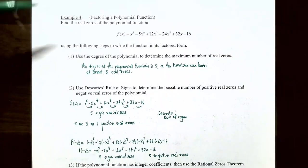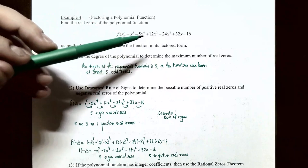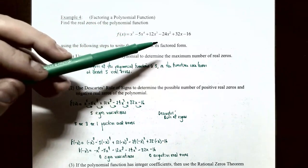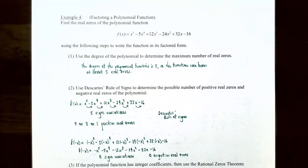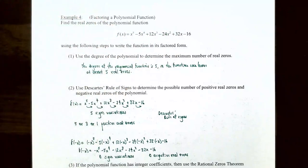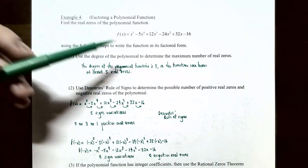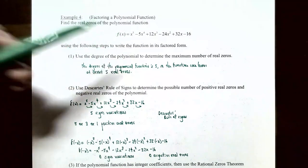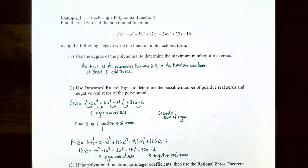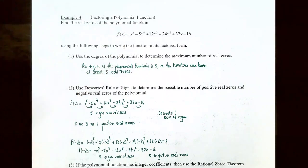Now let's look at Example 4, factoring a polynomial function. Find the real zeros of f of x equal to x to the 5th minus 5x to the 4th plus 12x cubed minus 24x squared plus 32x minus 16, and write it in factored form. Step one: use the degree to determine the maximum number of real zeros. Since the degree is five, there are at most five real zeros.